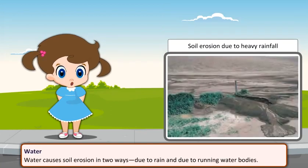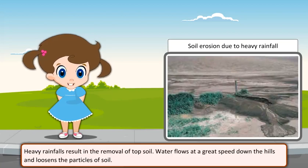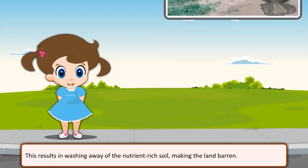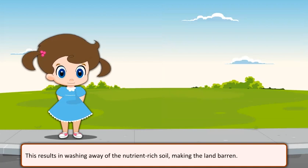Water causes soil erosion in two ways: due to rain and due to running water bodies. Heavy rainfall results in the removal of topsoil. Water flows at a great speed down the hills and loosens the particles of soil. This results in washing away of the nutrient-rich soil, making the land barren.